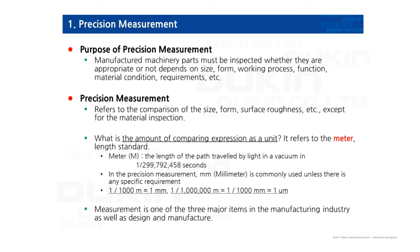Let's talk about the main purpose of precision measurement. This is about inspecting manufactured machinery parts — whether they are properly manufactured or not — depending on size, form, working process, function, material condition, requirements, etc. It refers to comparison of size, form, surface roughness, etc., except for material inspection.